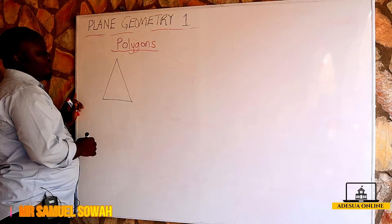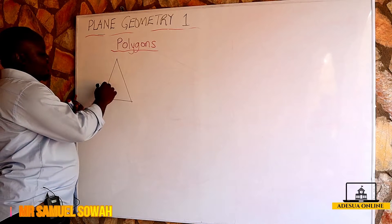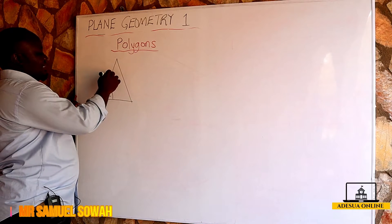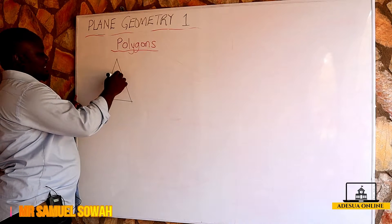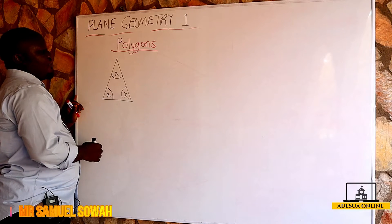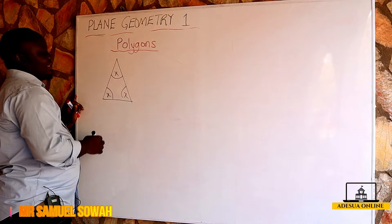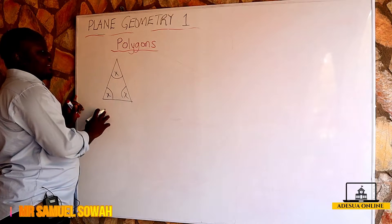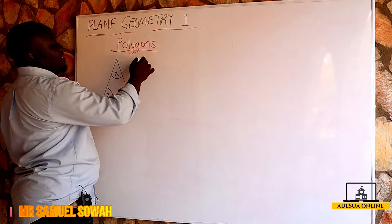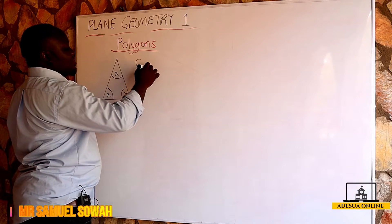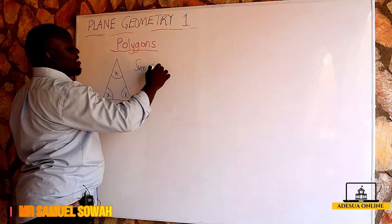A triangle is a polygon with three sides. So if this angle is x, this angle is x, and this angle is x, we are saying that how many angles we have here — three. Now the sum of interior angles...